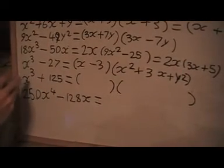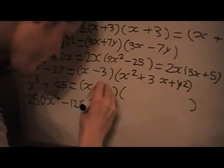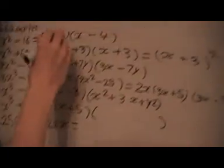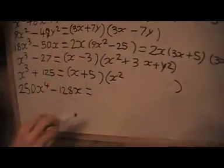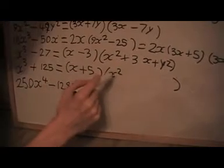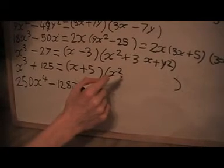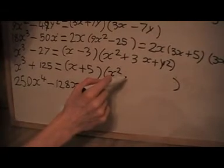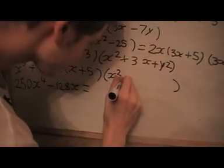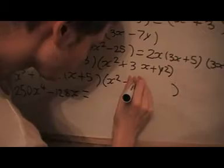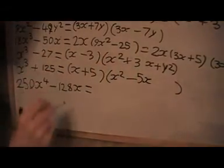Anyway, this one's the sum of two cubes. And on this one I'm going to get x plus 5, and I'm going to get an x² term. That gives me x³. Now this is a negative, so I want this to be negative instead of positive. So I'm going to get minus 5x.